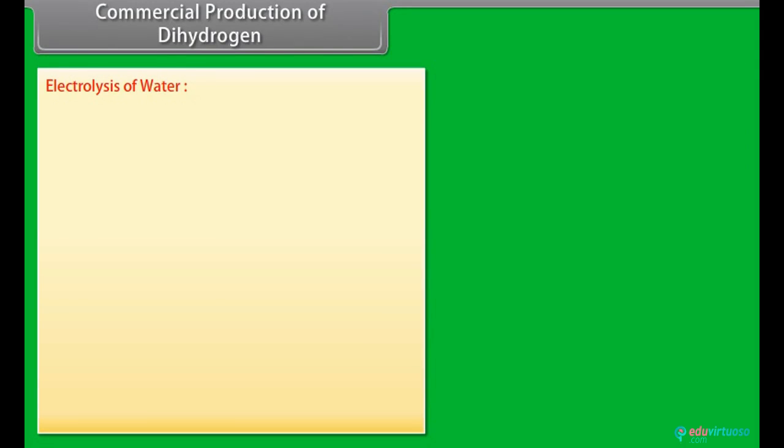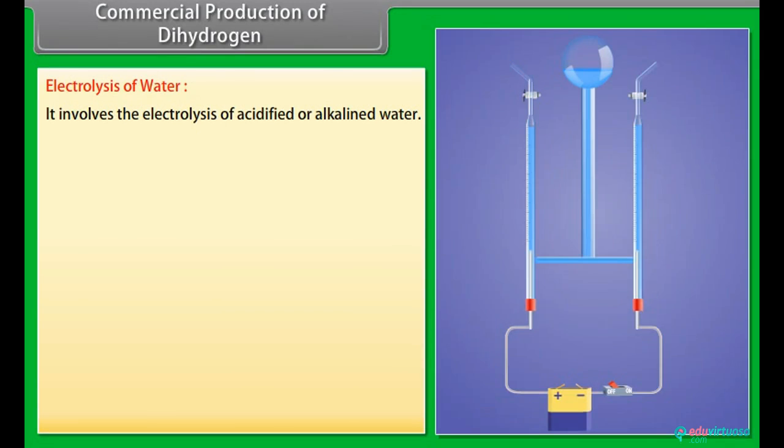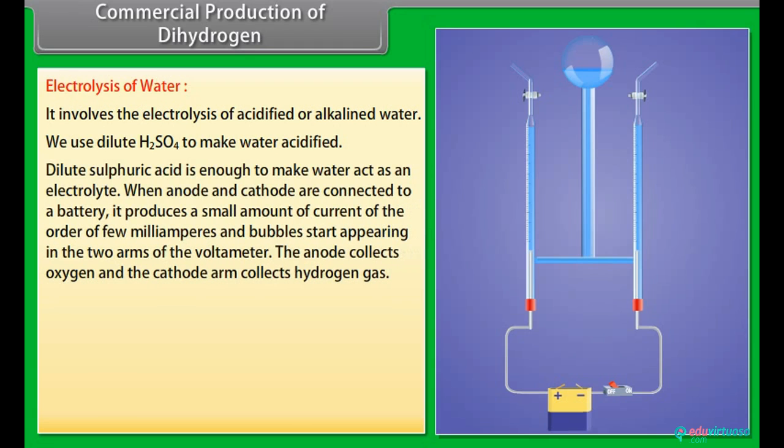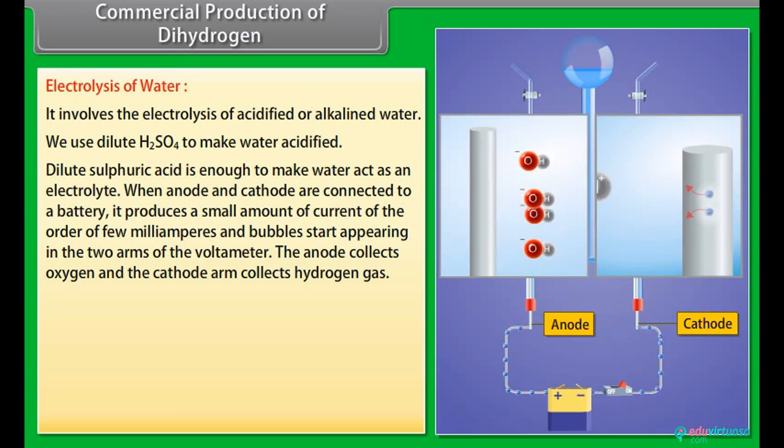Commercial production of dihydrogen - Electrolysis of water: It involves the electrolysis of acidified or alkalined water. We use dilute H2SO4 to make water acidified. Dilute sulphuric acid is enough to make water act as an electrolyte. When anode and cathode are connected to a battery, it produces a small amount of current of the order of few milliamperes and bubbles start appearing in the two arms of the voltmeter. The anode collects oxygen and the cathode arm collects hydrogen gas.